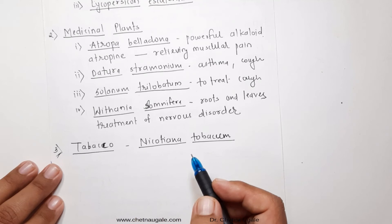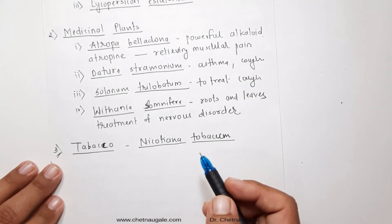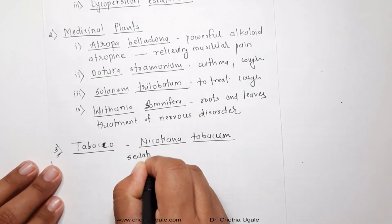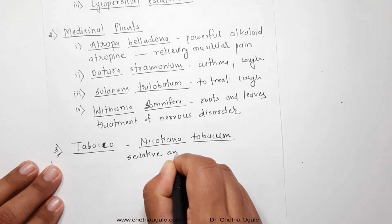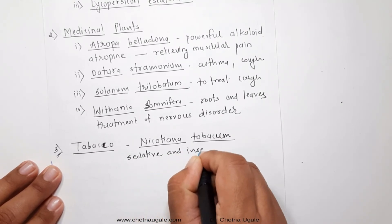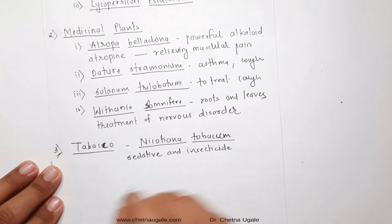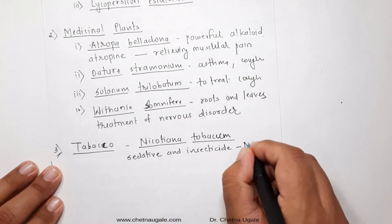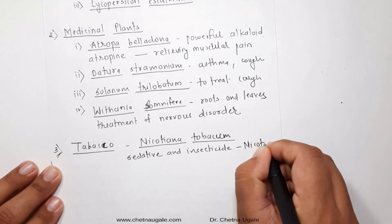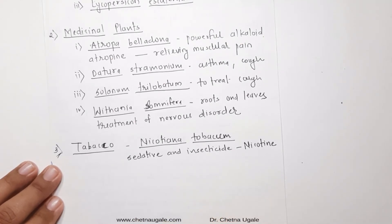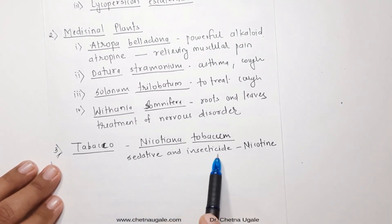On other hand, it is also used as insecticides. So basically, nicotine is sedative in nature, and on other hand it is also an insecticide. And even recently some studies show that this is also one of the carcinogens, carcinogens means which cause cancer. So this component nicotine is the principal component in Nicotiana tabacum.